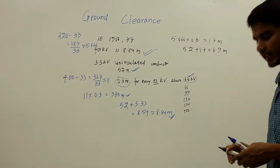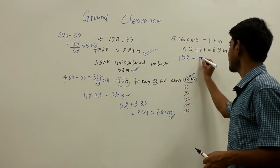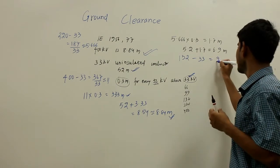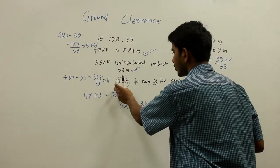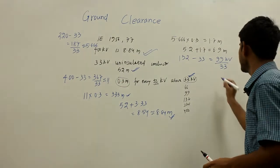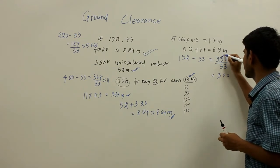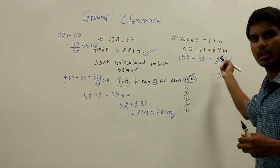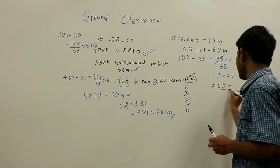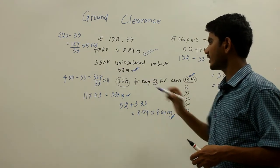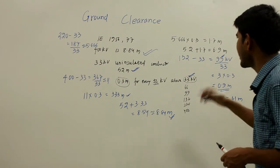Similarly, let us find the minimum ground clearance for a 132 kV line. Subtracting 33 kV gives 99 kV. Dividing 99 by 33 gives 3. So 3 times 0.3 equals 0.9 meters. Adding 0.9 meters to the base clearance of 5.2 meters gives 6.1 meters.